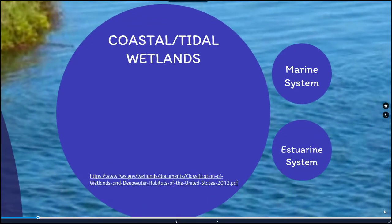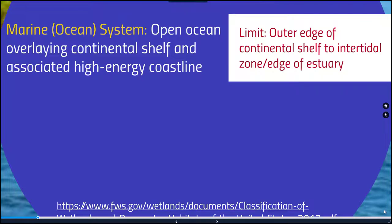So coastal and tidal wetlands — let's focus on those first. Marine or ocean systems include open ocean regions that overlay the continental shelf and are associated with a high energy coastline. The limit of this marine wetland system is the outer edge of the continental shelf to the inner tidal zone or the edge of the estuary.